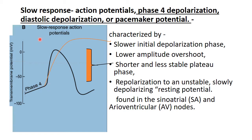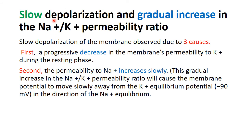In fast response, you find a stable resting membrane potential similar to skeletal muscle. In slow response, the resting membrane potential is unstable and slowly depolarizing, with a gradual increase in the sodium-to-potassium permeability ratio.